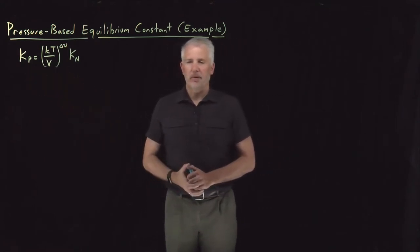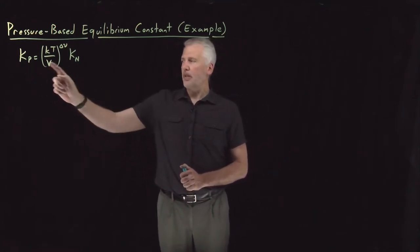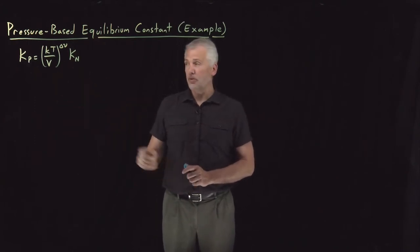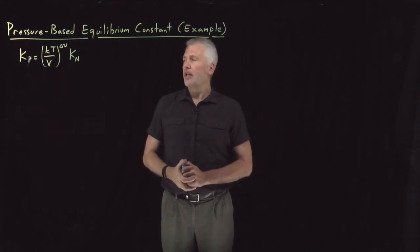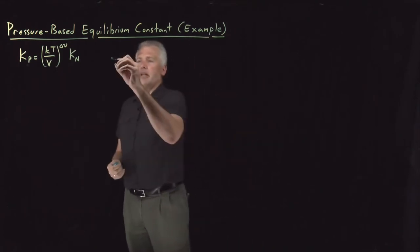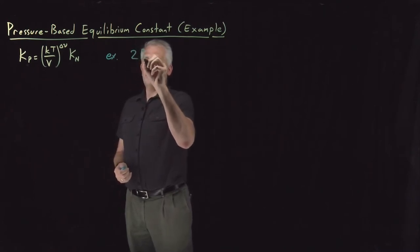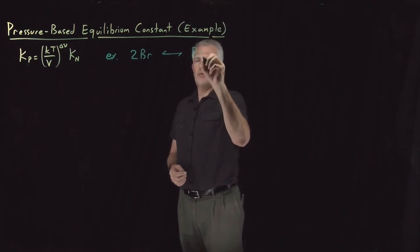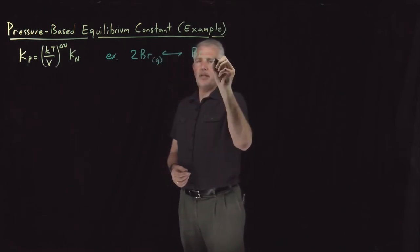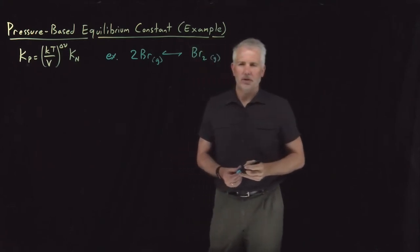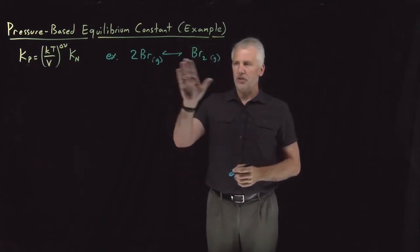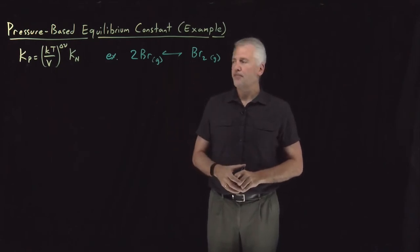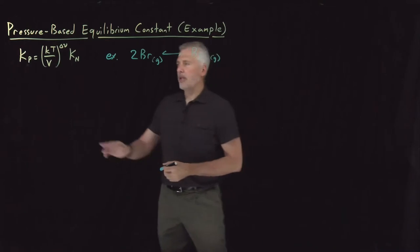Let's take this new equation for a spin — the one that relates our pressure-based equilibrium constant to an equilibrium constant determined in terms of moles that we might calculate from partition functions. Sticking with our favorite reaction, two bromine atoms dimerizing to form a bromine molecule in the gas phase, we want to describe the amounts of products in terms of the pressures of bromine atoms and Br2 gas. So we'd like to use Kp.